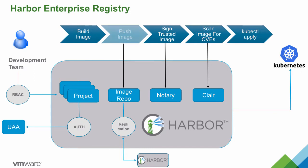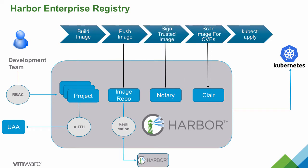Developers can build and push images to their projects based on their access policy. Harbor comes with an integrated notary server. If the content trust policy has been enabled on a project, developers can sign their images so that its provenance is verified. Harbor will restrict access to images that have not been appropriately signed.